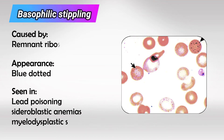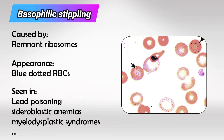Next we have basophilic stippling. These blue dots are basically ribosomes that stay within the RBCs. These are non-specific because we can see them in many different diseases, such as lead poisoning, sideroblastic anemia, myelodysplastic syndromes, and many others. Just memorize that the blue dots are due to remnant ribosomes.